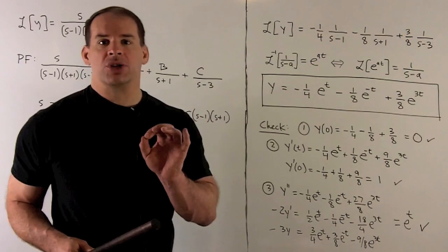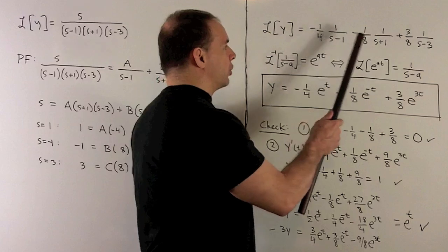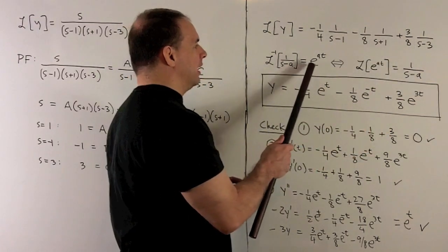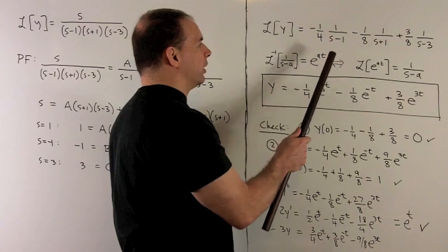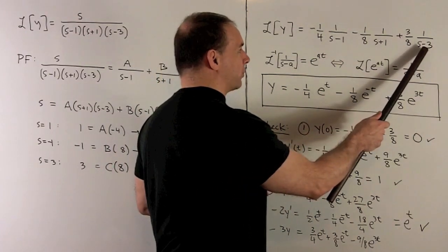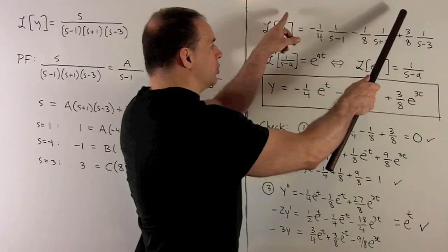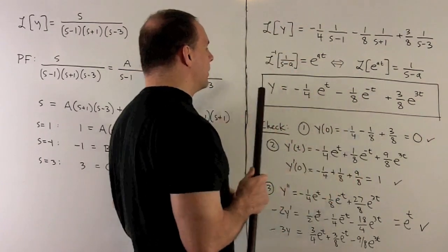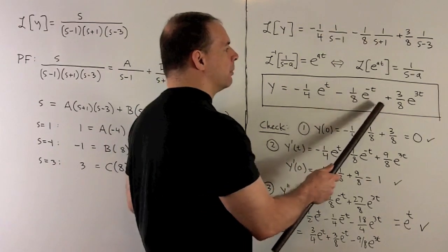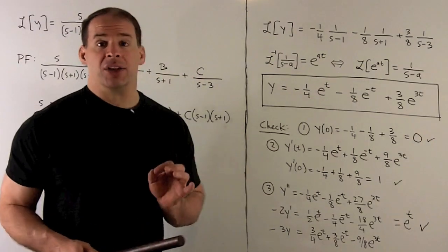We can now write L{y} as a sum of terms of the form 1 over (s minus a). Applying the inverse Laplace transform — recognizing each term as L{e^(at)} — with a equal to 1, minus 1, and 3 respectively, we get y equals minus one-quarter e to the t minus one-eighth e to the minus t plus three-eighths e to the 3t.